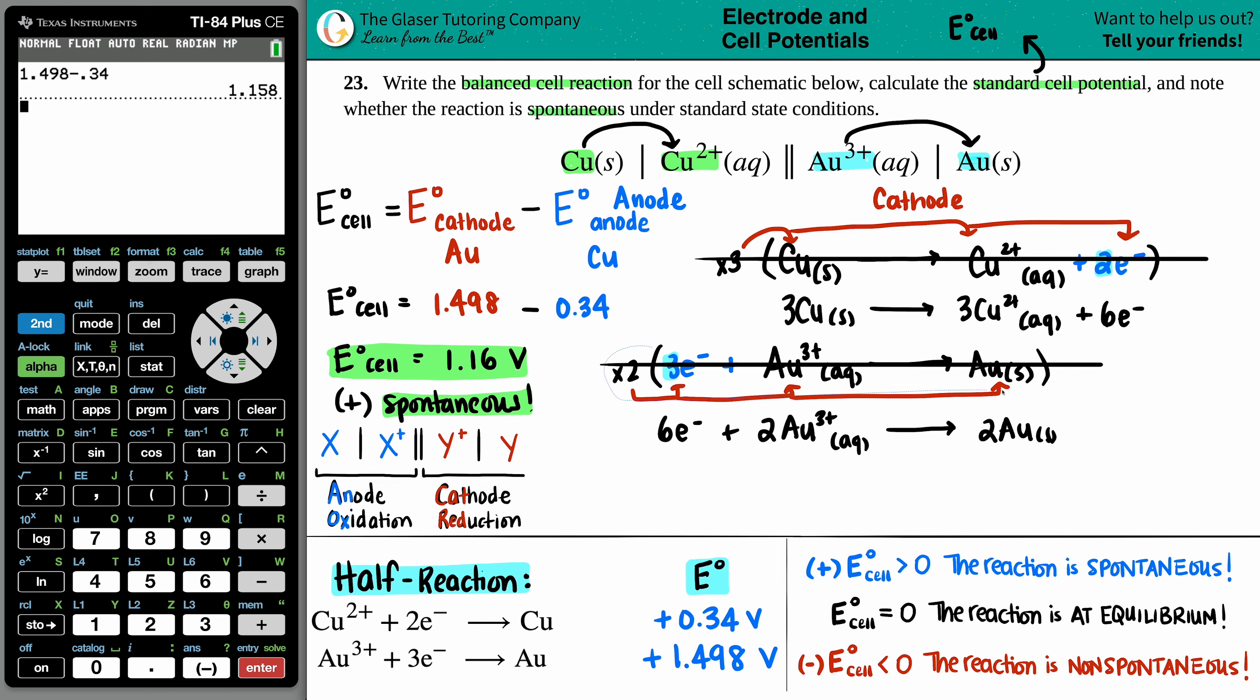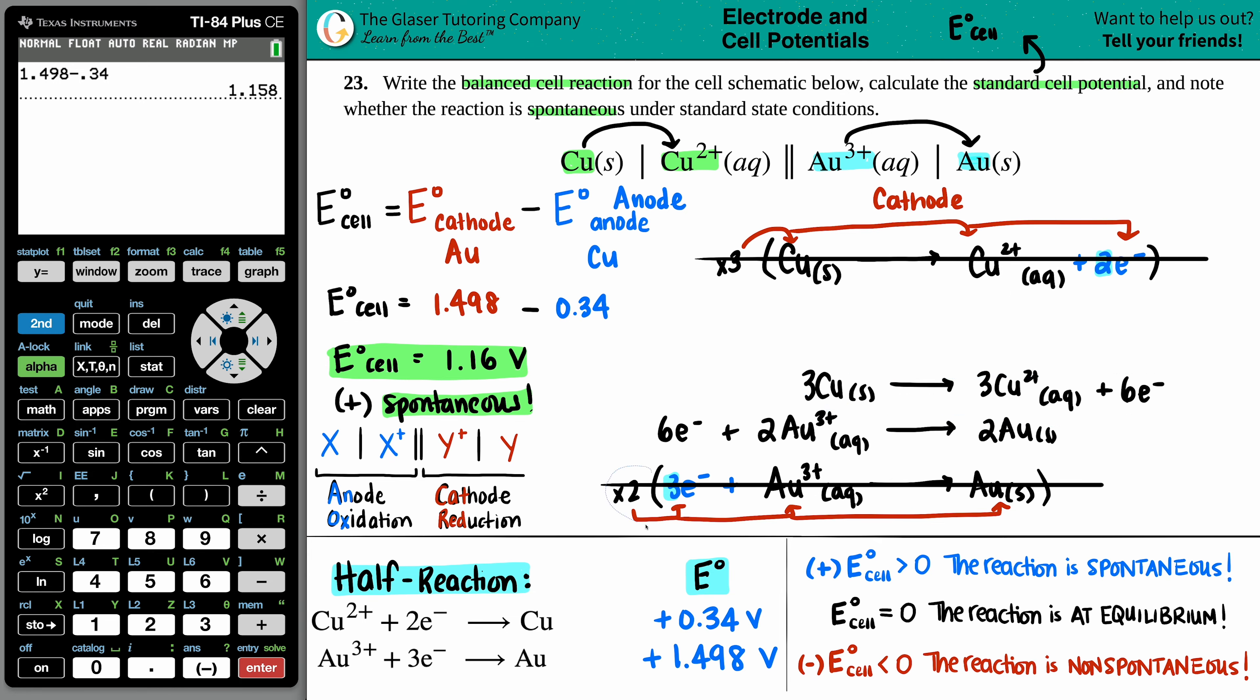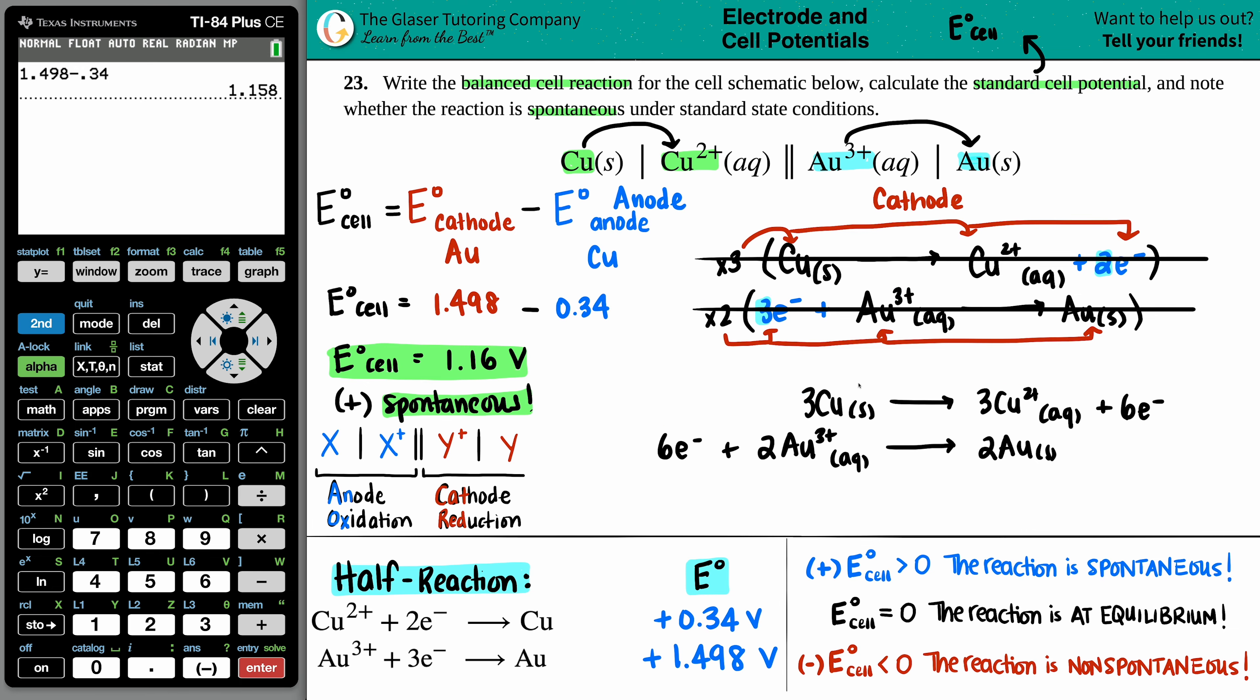Now I'm going to rearrange this. Now the electrons are balanced. So I can now add the reaction together. Cancel out like substances. That's why we have to get the electrons to be balanced because I don't want to see those in my balanced equation. And anything that's on the reactant side stays on the reactant side. Anything on the product side stays on the product side. So we have three Cu solid plus two Au three plus aqueous yields three Cu two plus aqueous plus two Au solid. And that is the final answer.